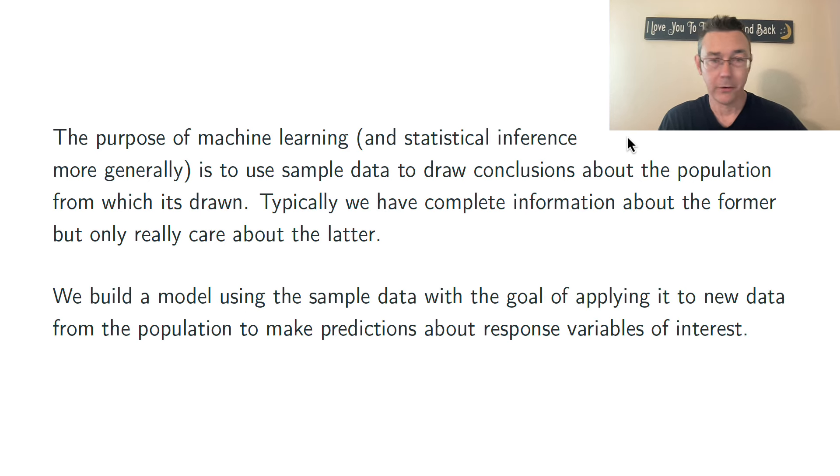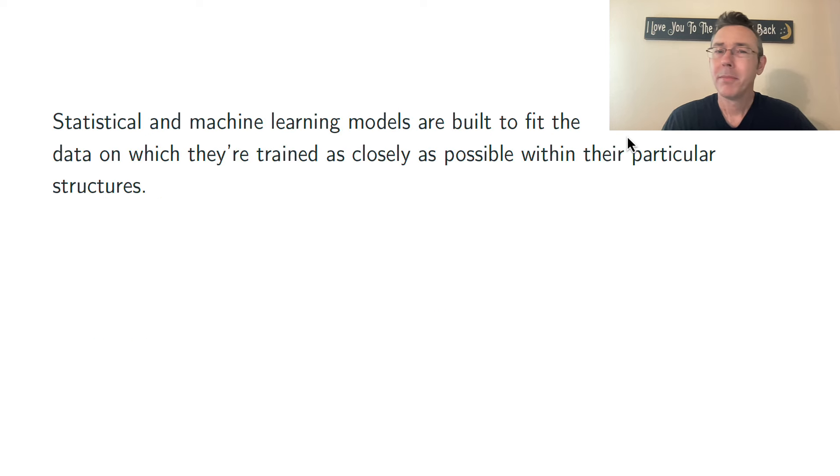So we build the model, our machine learning or statistical inference model, using the sample data with the goal of applying it to new observations that we don't have in our sample set. The problem there is that the statistical and machine learning models that we build are made to fit the sample data as closely as possible. Why would you build it otherwise to try and fit it poorly? I don't think so.